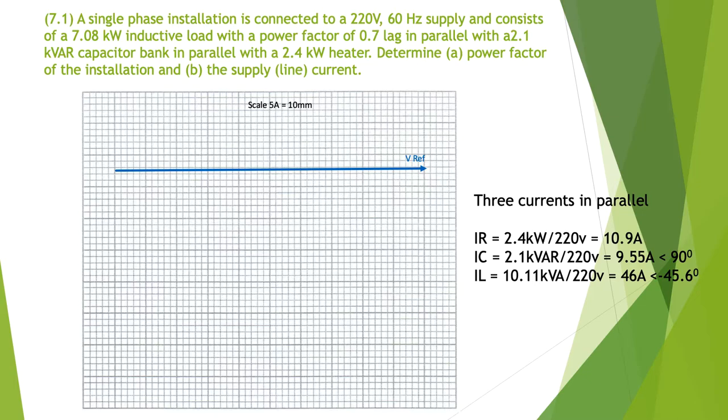Determine (a) the power factor of the installation and (b) the supply line current. The three currents are in parallel. The resistive current IR is 2.4 kW divided by 220 volts equals 10.9 amps. The capacitor current IC is 2.1 kVAR divided by 220 volts equals 9.55 amps at 90 degrees lead. The inductive current IL is 10.11 kVA divided by 220 volts equals 46 amps at minus 45 degrees.